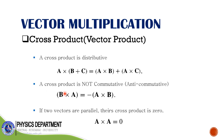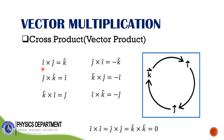Some properties of the cross product: first, it is distributive. Second, it is anti-commutative — meaning b × a equals the negative of a × b, unlike the dot product which is commutative. Also, if two vectors are parallel, their cross product equals zero: a × a = 0 and b × b = 0.